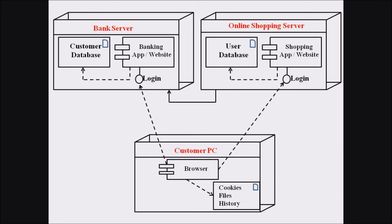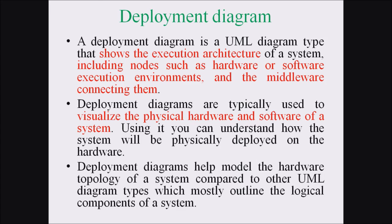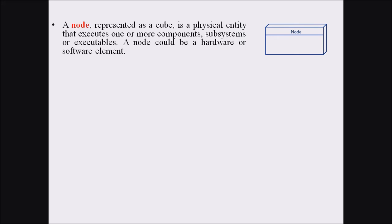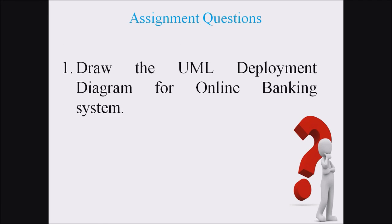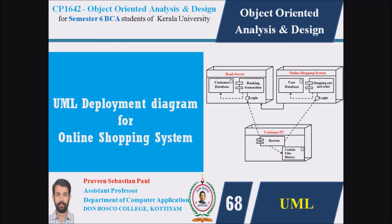A deployment diagram basically focuses on the hardware as well as the software components associated with a particular process. In an online shopping environment, there is an online shopping website, a banking website, and a customer PC, phone, or laptop on which all these activities are operated. This is how we represent the deployment diagram for online shopping. As mentioned, a deployment diagram is used to visualize the physical hardware and software of a system. The assignment question is: draw the UML deployment diagram for the online banking system. In the upcoming lecture, we will be discussing some UML tools associated with developing these diagrams.